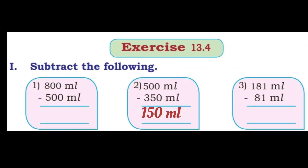Now we will see the exercise. Subtract the following. First question: 800 ml minus 500 ml. 0 minus 0 is 0, 0 minus 0 is 0, 8 minus 5 is 3. Answer: 300 ml.